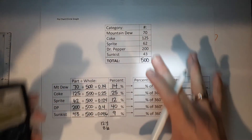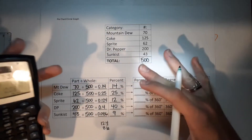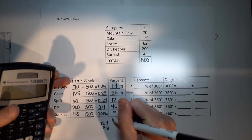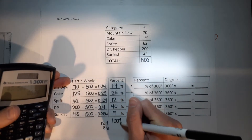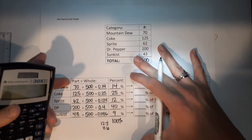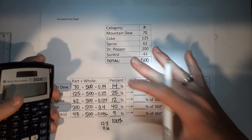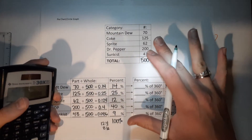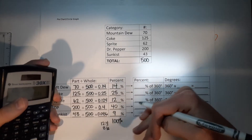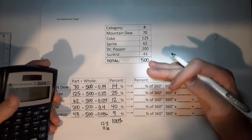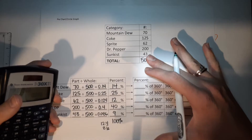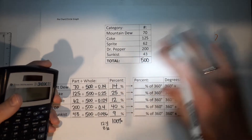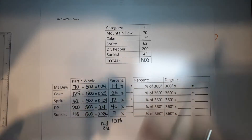A quick check: add all the percentages up — they should equal 100%. Because we rounded a few times, it's possible to get 99% or 101%, and that's fine. As long as you're at 99, 100, or 101, you're good.